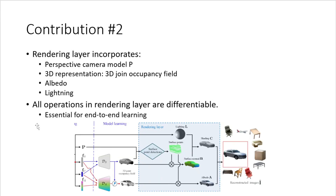Contribution two is the rendering layer — the differential renderer. The goal is to convert 3D shape and albedo information back into a 2D image, allowing end-to-end learning. Crucially, all operations in the rendering layer are differentiable, which is essential for backward propagation in deep learning. Without differentiability, there would be no learning. Four factors play a role: lighting, camera projection, albedo, and shape.